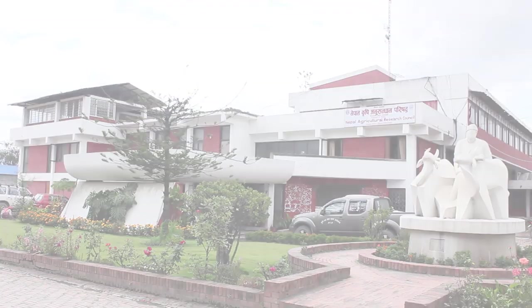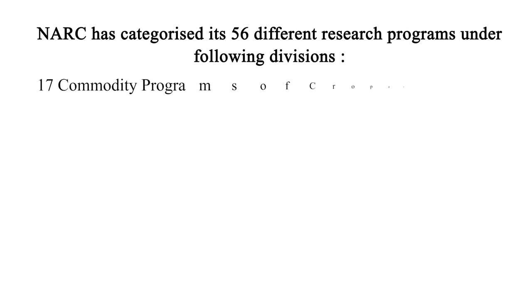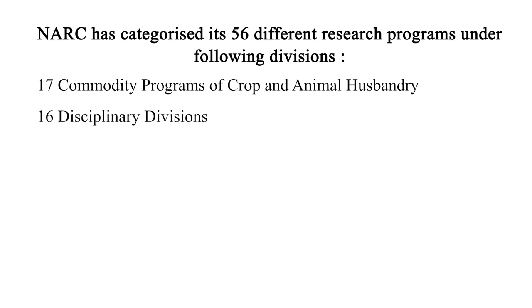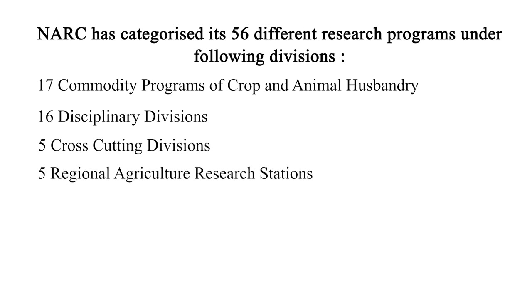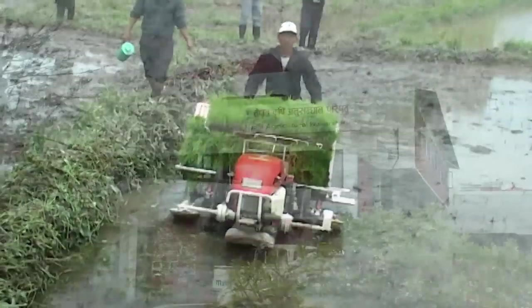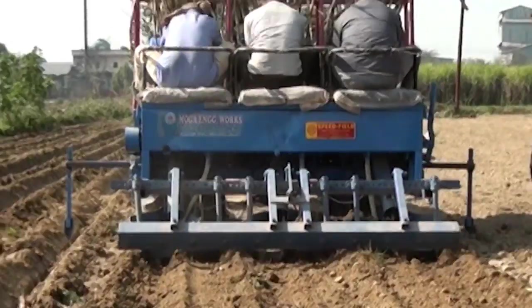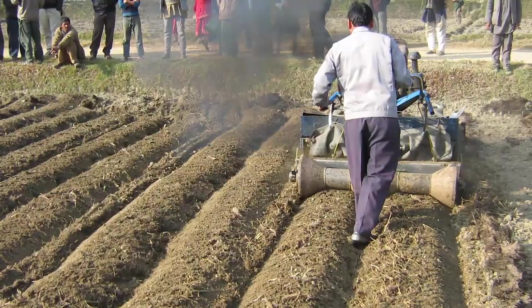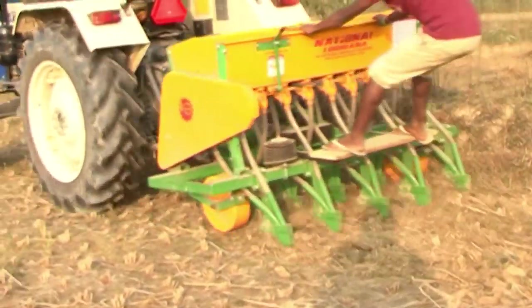NARC has categorized its 56 different research programs on the following divisions: 17 commodity programs of crop and animal husbandry, 16 disciplinary divisions, 5 cross-cutting divisions, 5 regional agriculture research stations, and 13 agriculture research stations. NARC has been conducting on-farm research at the site through various activities to transfer the modern technologies to the farming communities.